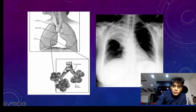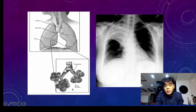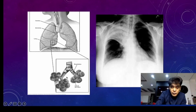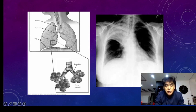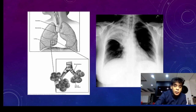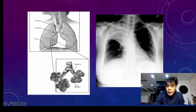Many times there is an obstruction at a certain level, and as a result the alveoli collapse. But there may be some collateral ventilation. Because of this, the bronchi may still have some air and that can produce an air bronchogram. So, air bronchogram may be seen in a few cases of collapse because of collateral ventilation.